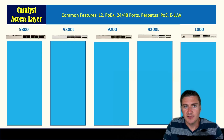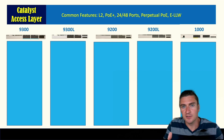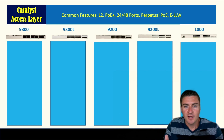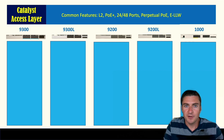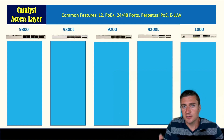I created a matrix in PowerPoint with all the switches from the 9300 down to the Catalyst 1000. As I talk through the features, we're going to light them all up. At the top, I've got a list of some common features. Number one: all these switches can do layer two.